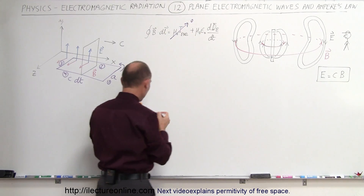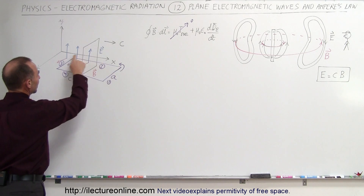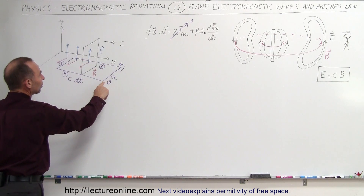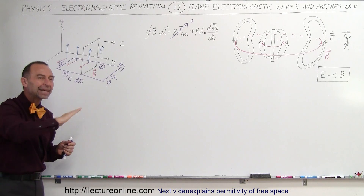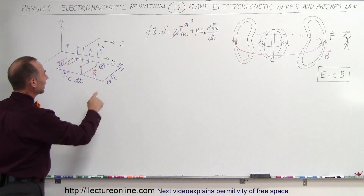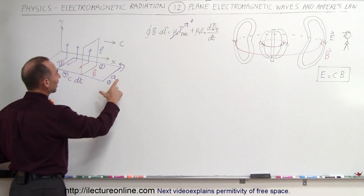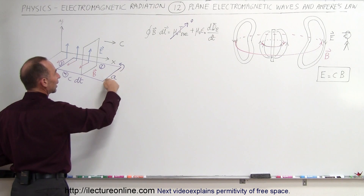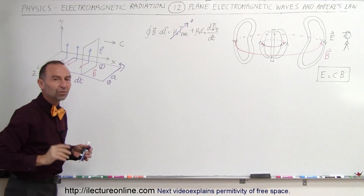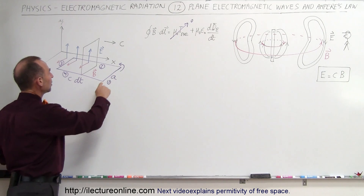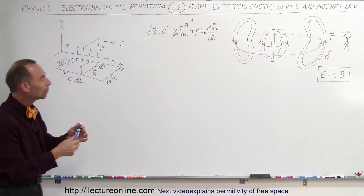All we have to do is integrate around a closed-loop path. The path we chose is a horizontal path in the same plane as the direction of the magnetic field. We integrate along four sections. For the front section, there's no magnetic field because the electromagnetic radiation hasn't yet reached that position. Therefore, the path length A times the strength of the magnetic field equals zero — path one contributes zero.